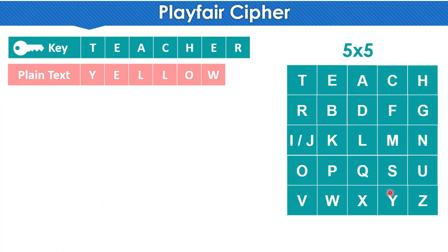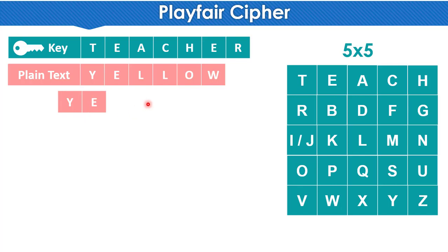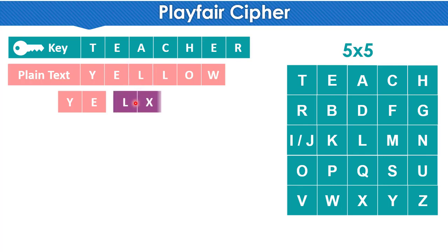Now in the next step we need to make pairs from the plain text 'yellow'. The first pair will be Y and E. Then the next pair should be L and L, but there is a rule: when two same alphabets come together in a pair, we separate them by inserting X between them. So the first L stays with X as a pair: L and X.